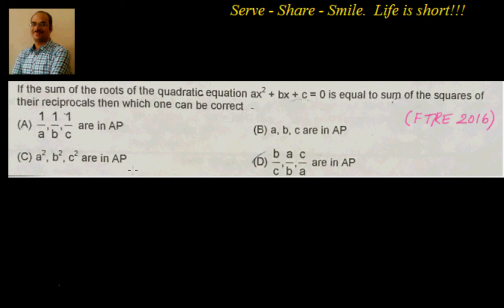Hello friends, welcome back! This example question is from FTRE 2016 and the concept is arithmetic progression. It's given that the sum of roots of a quadratic equation ax² + bx + c = 0 is equal to the sum of the squares of their reciprocals. We have to pick one of the options: whether 1/a, 1/b, 1/c are in AP; a, b, c are in AP; a², b², c² are in AP; or b/c, a/b, c/a are in AP.